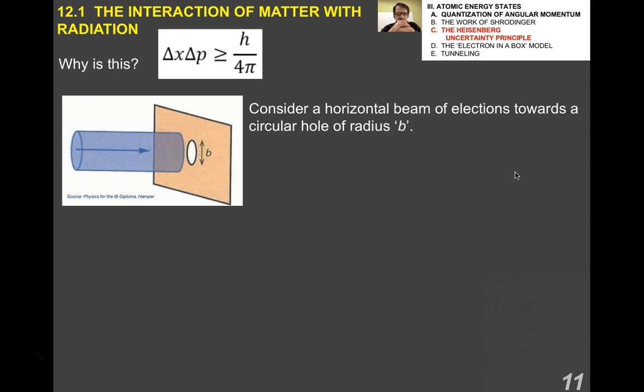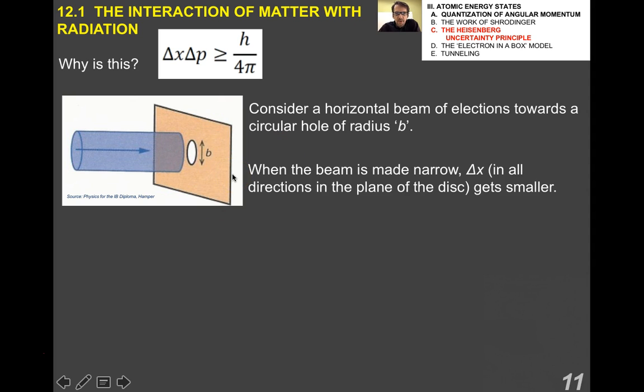Now to understand why this is, I'm going to do a very simple derivation, a very qualitative derivation that's not mathematically rigorous, but will give you an idea of where Heisenberg's uncertainty principle comes from. Consider a horizontal beam of electrons, here shown by this blue cylinder, being beamed towards an aperture of radius B. When the beam is made very narrow, delta X, the uncertainty in the position becomes very small.